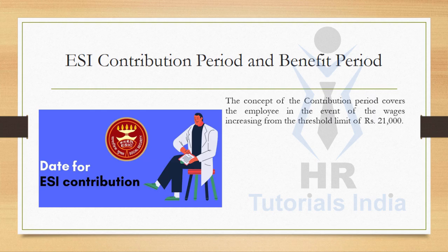The concept of contribution period covers the employee in the event of wages increasing from the threshold limit of 21,000. For example, if the salary or wages of an employee is increased to more than 21,000, then the employee will not be covered under ESI. But the contribution period matters because when contributions were paid by the employer and employee during the period where the salary was under the threshold limit, the employee was covered under ESI. After increasing past the salary threshold limit, he will not be covered under ESI.